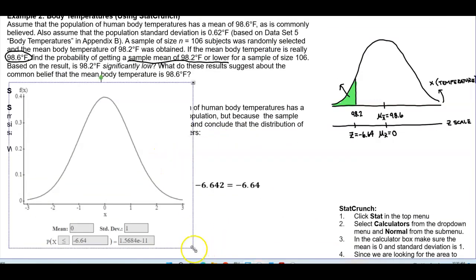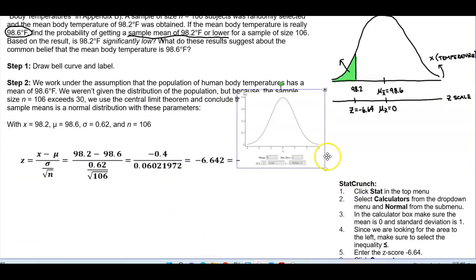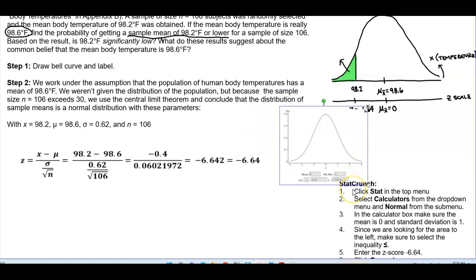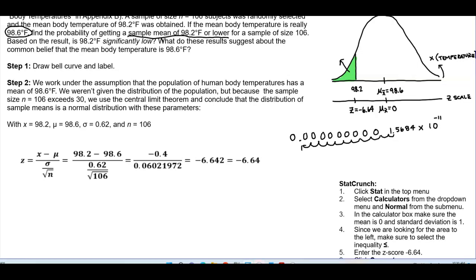So you can see what we get for our area. In our area, it's given us a value of 1.5684 times, and that's 10, that's e, to the negative 11. So that means we need to move that decimal over 11 times. So it's 1, 2, 3, 4, 5, 6, 7, 8, 9, 10, 11. This is where our decimal is. So we have 0 point 1 2 3 4 5 6 7 8 9 10.